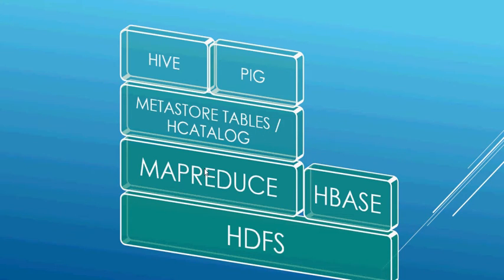MapReduce is a Java-based framework to perform distributed data processing. The idea is that each job has a user-defined map phase, followed by a user-defined reduce phase — and that is why it is called MapReduce. We are going to talk about the components of MapReduce in the next slide.